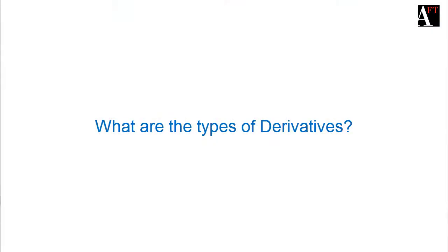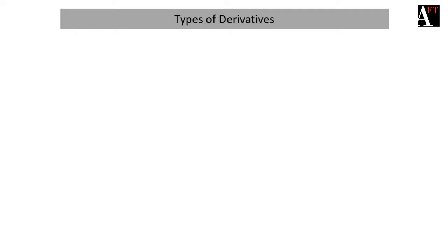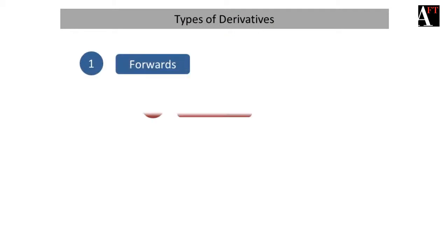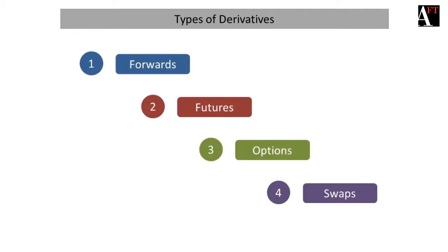What are the types of derivative instruments that we have in this world? There are basically four types of derivatives: Forwards, Futures, Options, and Swaps.